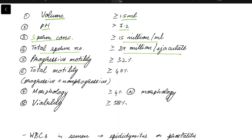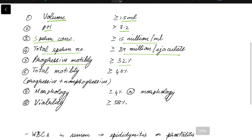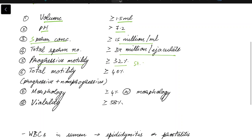The progressive motility should be greater than or equal to 32 percent. Now what is progressive motility? Progressive motility is the motility of sperm in a straight line or large circle.